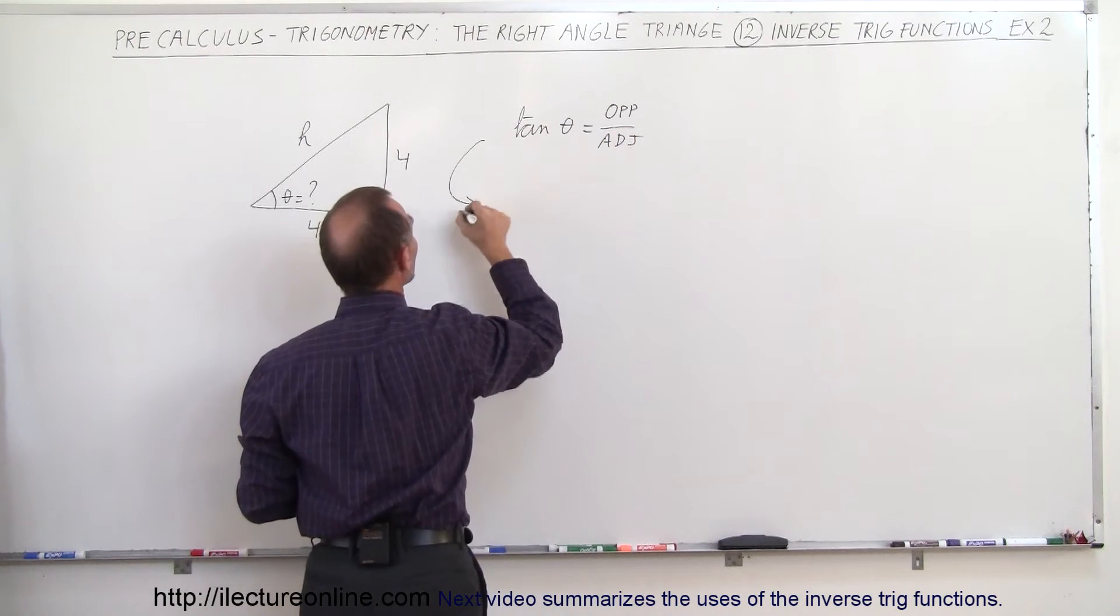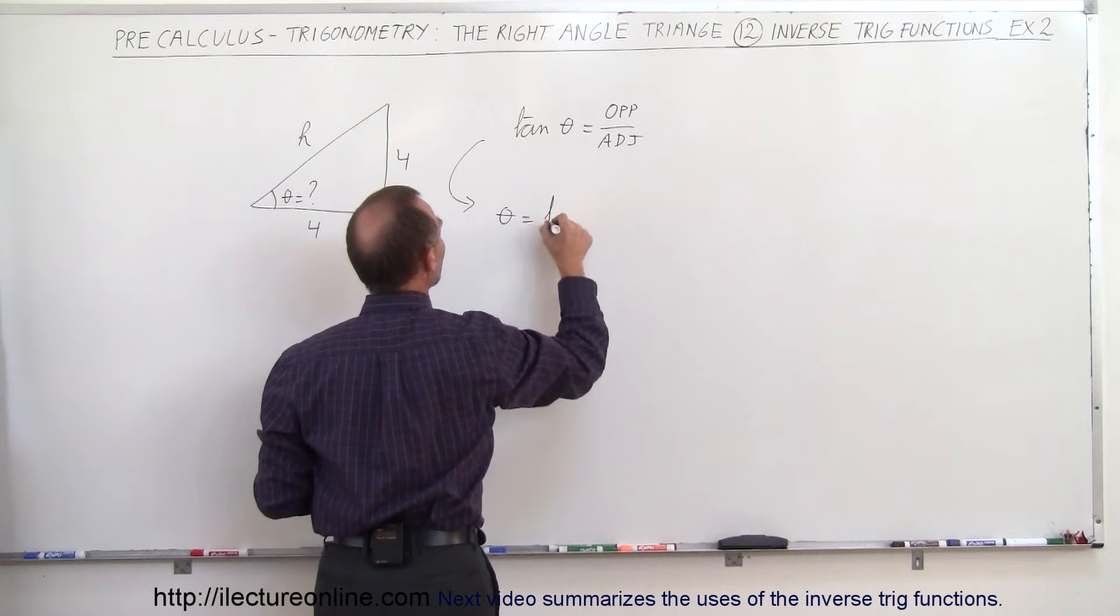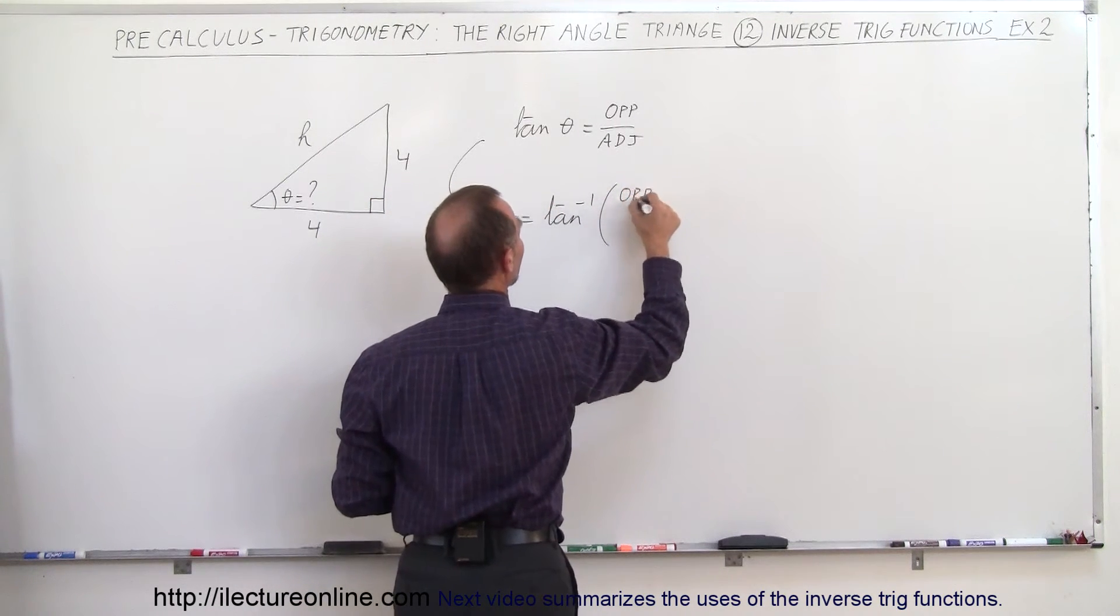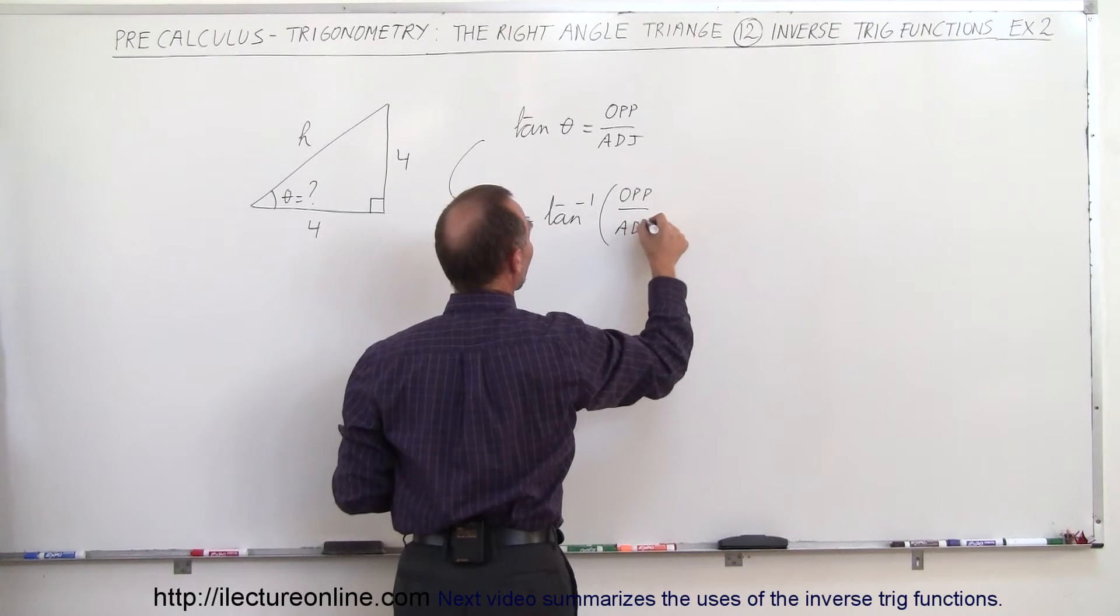From that, you can conclude that theta therefore equals the arctangent, if you want to find the angle, of that ratio, opposite side divided by the adjacent side.